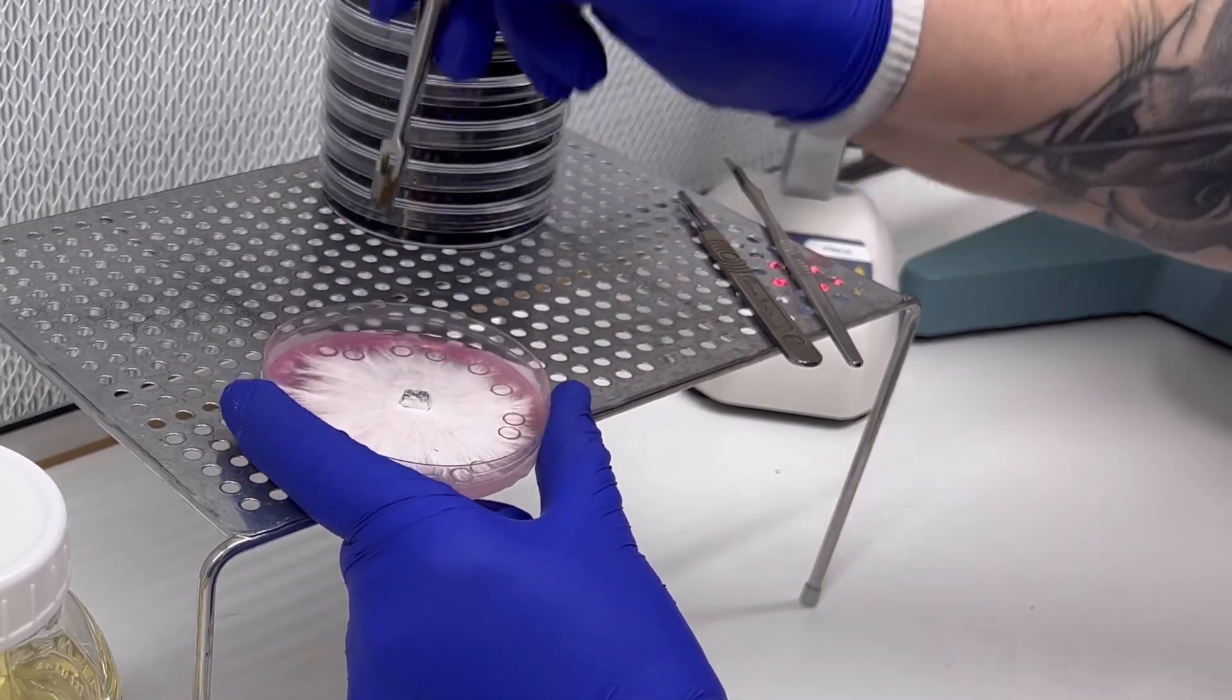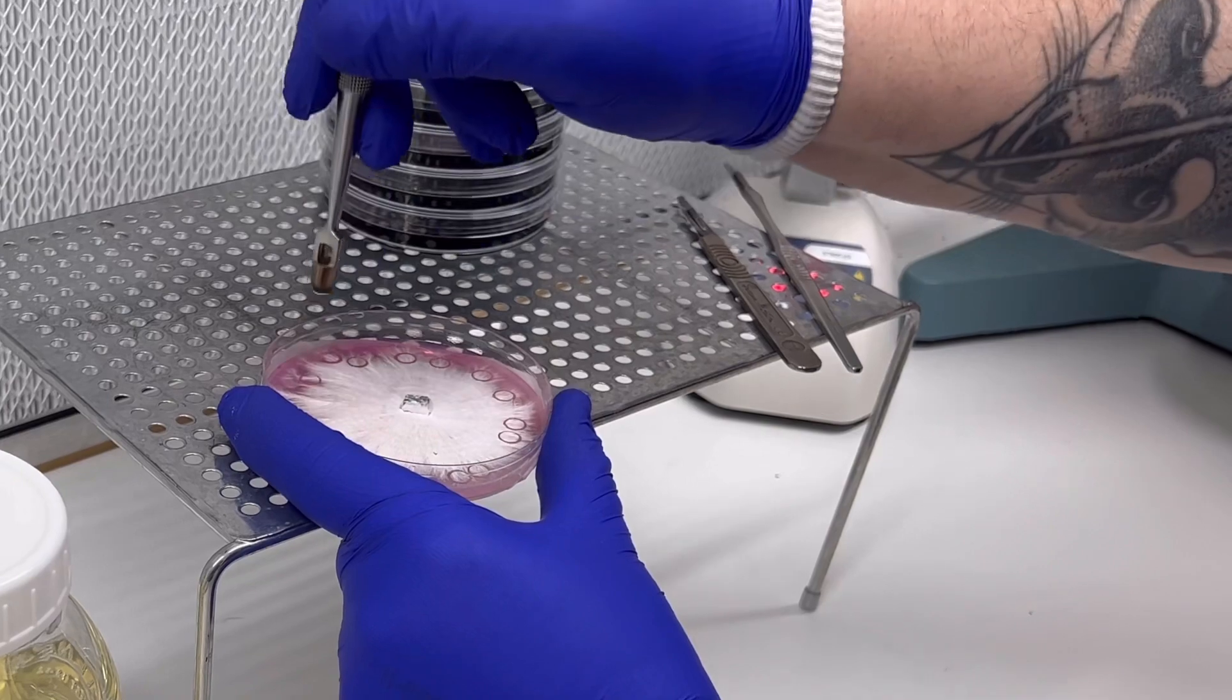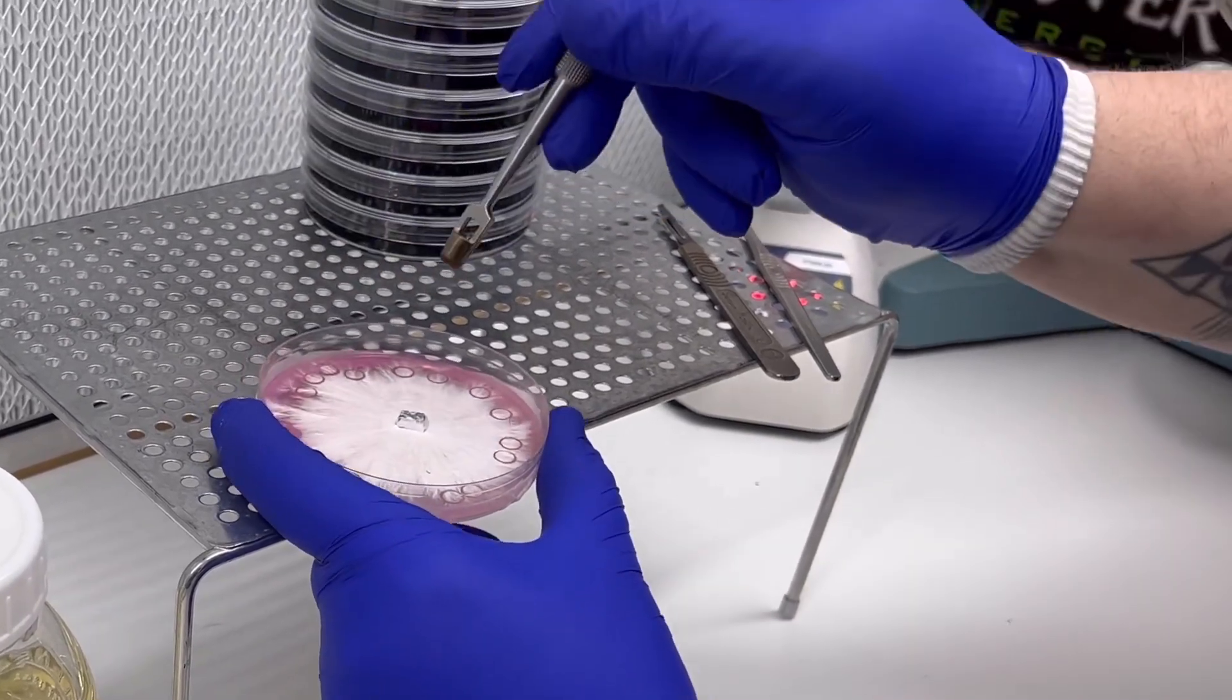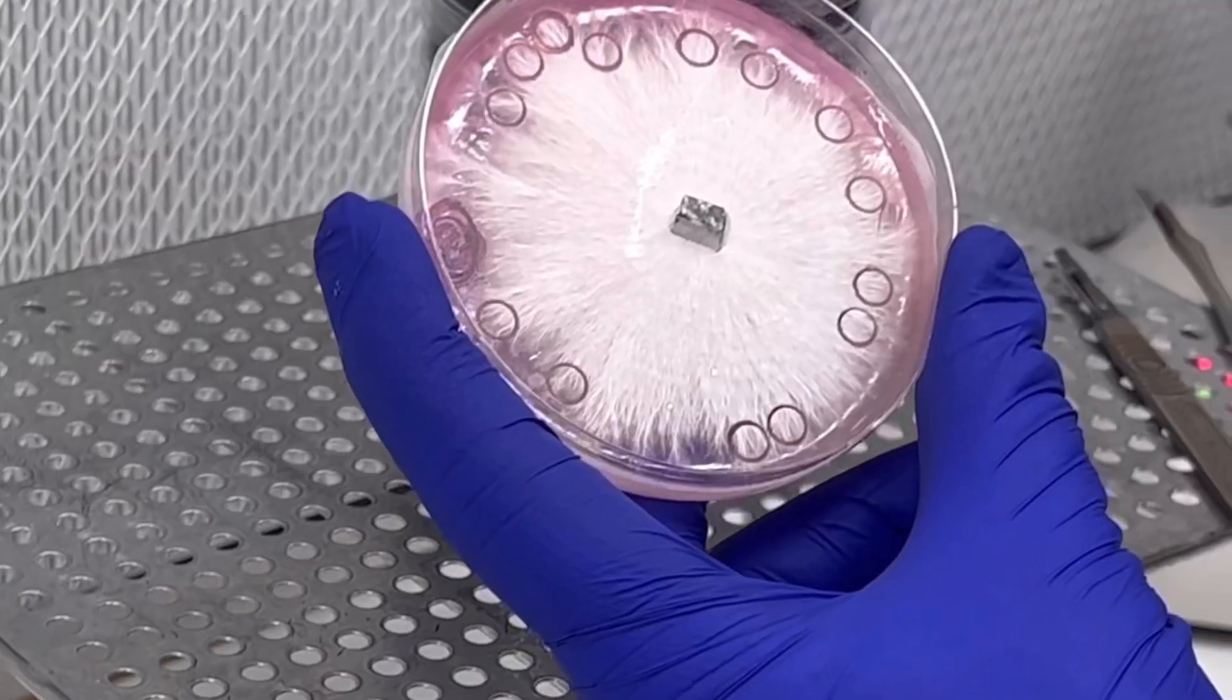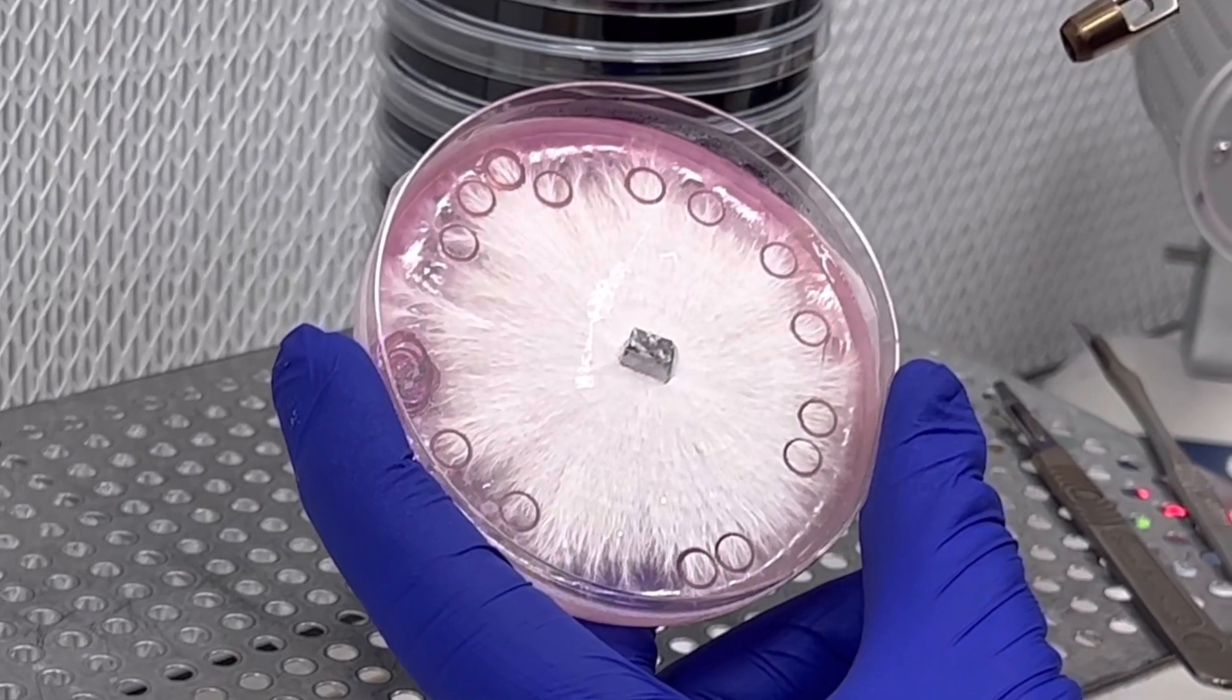What that does is it leaves these tiny little circles. The actual pieces of agar don't come out inside the punch, they're actually just left on the plate like that. So now you've got some decent pieces of mycelium that are easy to transfer from your plate.